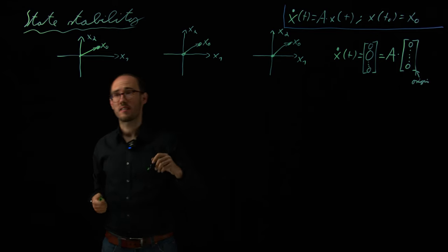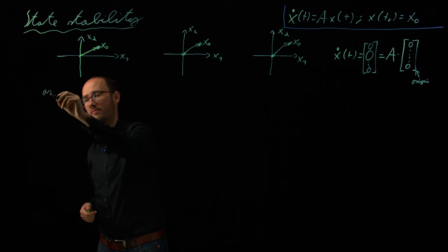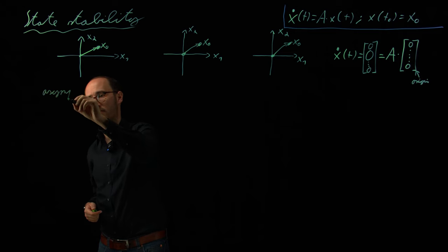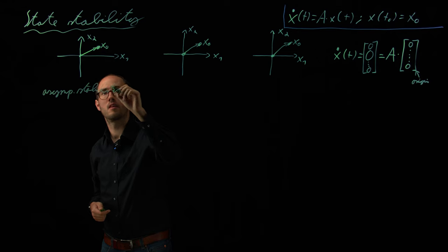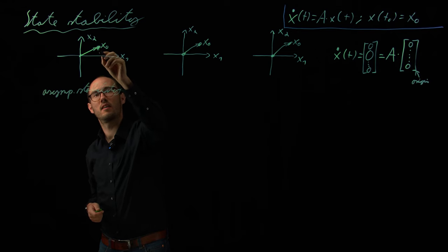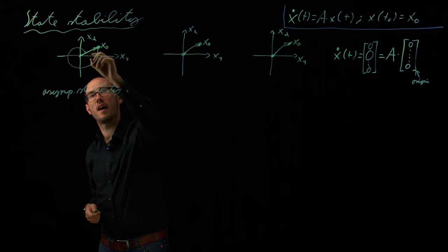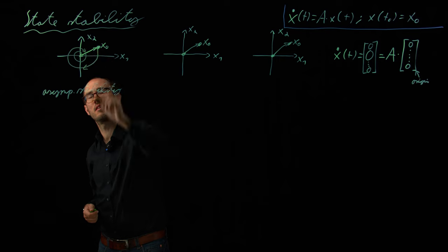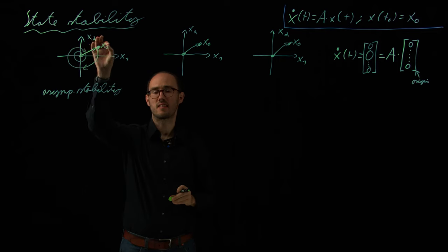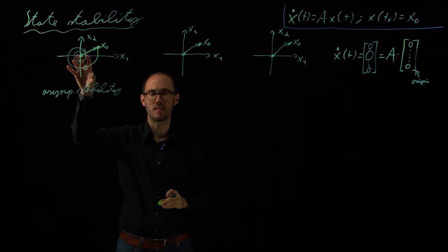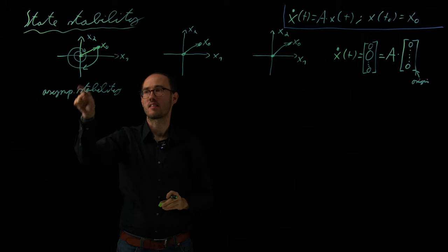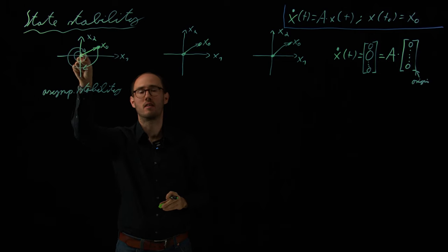So I put it here, and then I let it free, and I'm looking on the state response. And we can basically differentiate three different behaviors regarding the state response with respect to state stability. The first case is the so-called asymptotic stability, which results in a bounded and converging response of the state. So bounded in that sense, I let it loose, and the response of the state is limited, it is bounded, and asymptotically means it is converging back towards the origin.